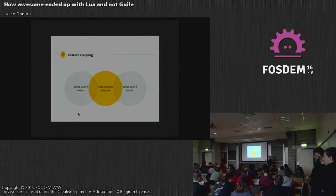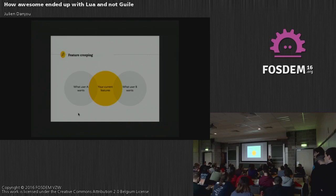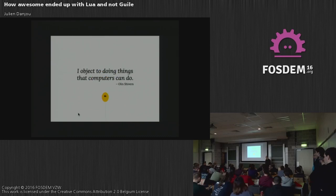But pretty soon, people started to ask for a lot of features, and a lot of the features were either incompatible or really too complicated to write. People started to want title bars, so you write title bars, and then people want to have title bars on windows that are floating and not tiled, but only on this desktop — so that's a lot of options. Pretty soon, you start thinking about having your own DSL, which is always a bad idea, because you start with a small DSL and in the end you end up with a full language.